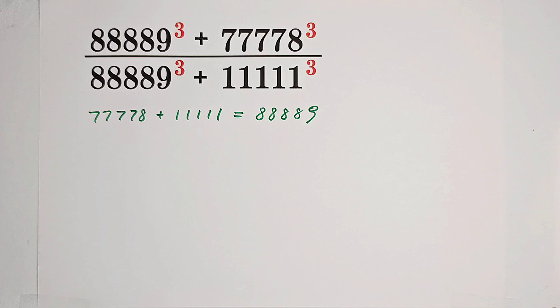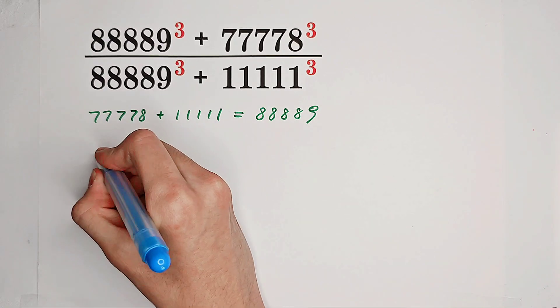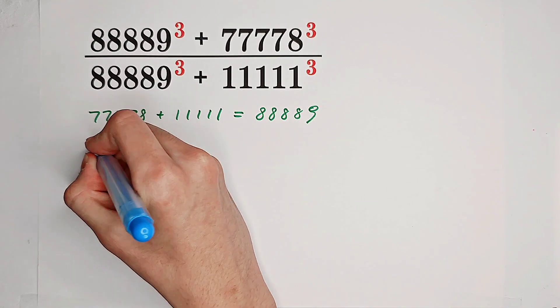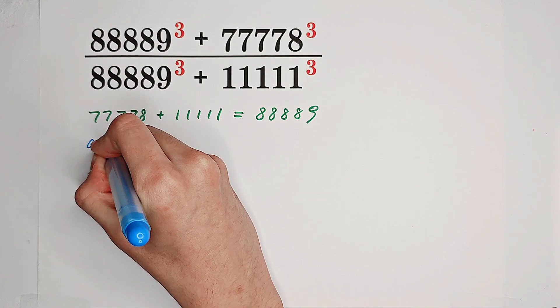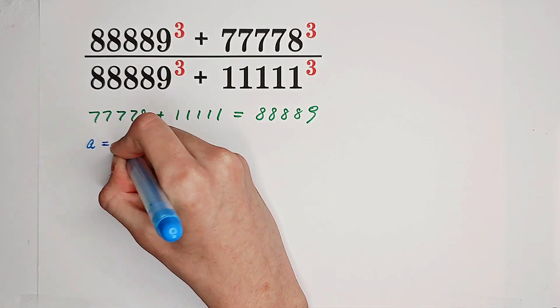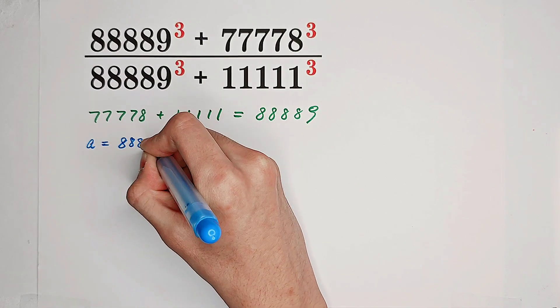Then what shall we do? Of course, substitution. Wow. We can let A be equal to 88,889.